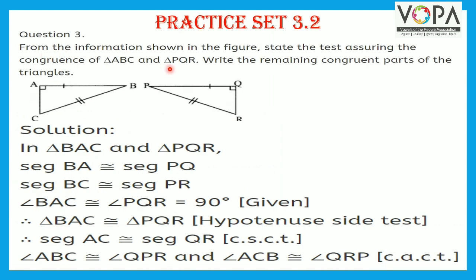Question 3. From the information shown in the figure, state the test assuring the congruence of triangle ABC and triangle PQR, and write the remaining congruent parts. Solution. In triangle BAC and triangle PQR: segment BA is congruent to segment PQ, segment BC — that is the hypotenuse — is congruent to hypotenuse PR, and angle BAC is congruent to angle PQR, each of 90 degrees. Therefore, triangle BAC is congruent to triangle PQR by hypotenuse-side test.